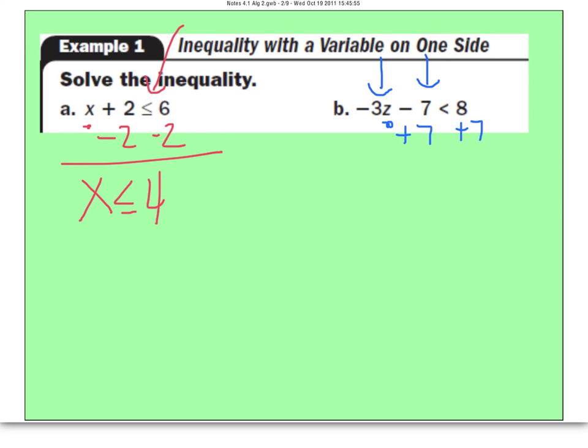Now to get rid of the 3, you divide by negative 3. Now, this is very key. This is a star exclamation point moment. Whenever you multiply or divide by a negative number, you must flip the inequality symbol. So this will change to z is greater than 15 divided by negative 3 is negative 5.